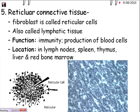Here is reticular connective tissue, made up of reticular fibers — which are just a few collagenous fibers, only two or three. It has its own name: reticular. The fibroblast here has a special name called the reticular cell. This is also found in the lymphatic system. Function: immunity and production of blood cells. Location: lymph nodes, the spleen, the thymus, the liver, and red bone marrow.